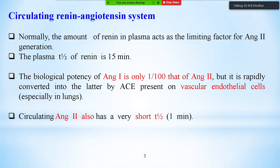The circulating renin-angiotensin system is produced in the kidney and circulates in blood. The amount of renin in plasma acts as the limiting factor for angiotensin 2 generation. The plasma half-life of renin is 15 minutes. The biological potency of angiotensin 1 is only 1% of angiotensin 2, but it is rapidly converted to angiotensin 2 by ACE present in vascular endothelial cells, especially in the lungs. Circulating angiotensin 2 has a very short half-life of about one minute.